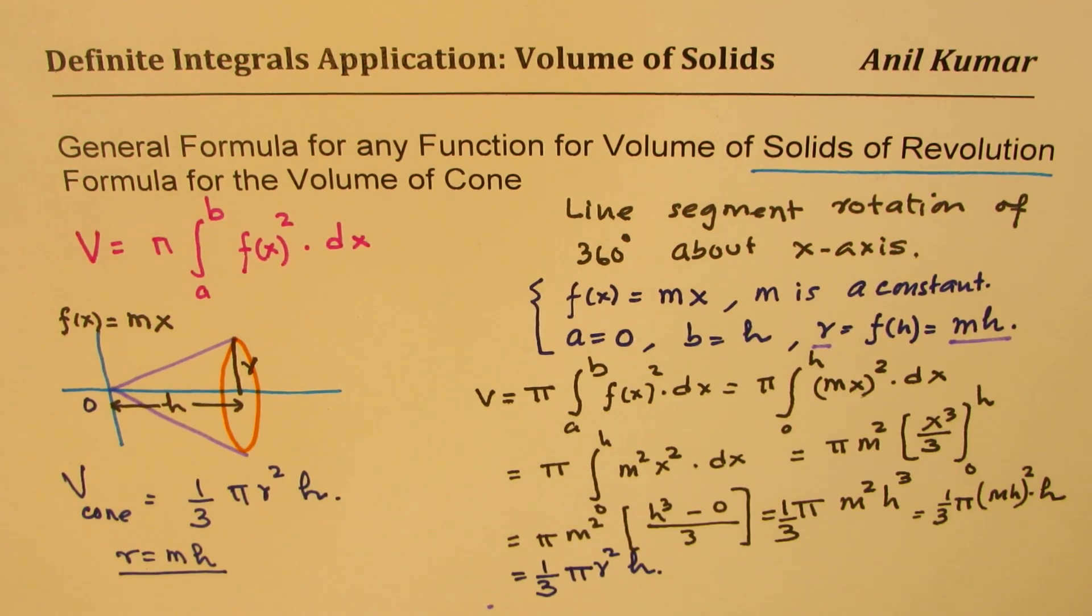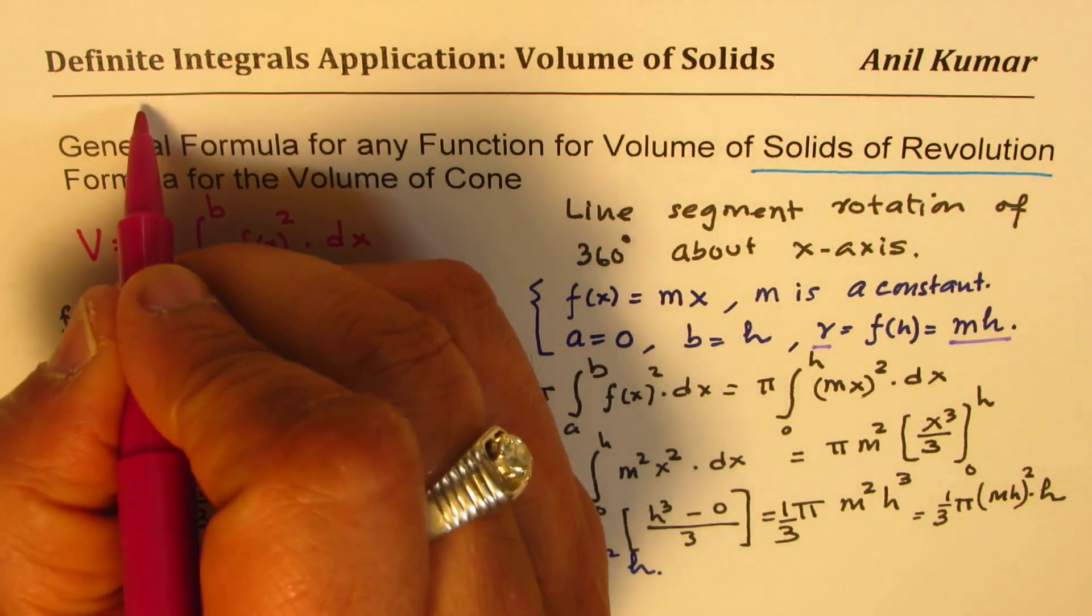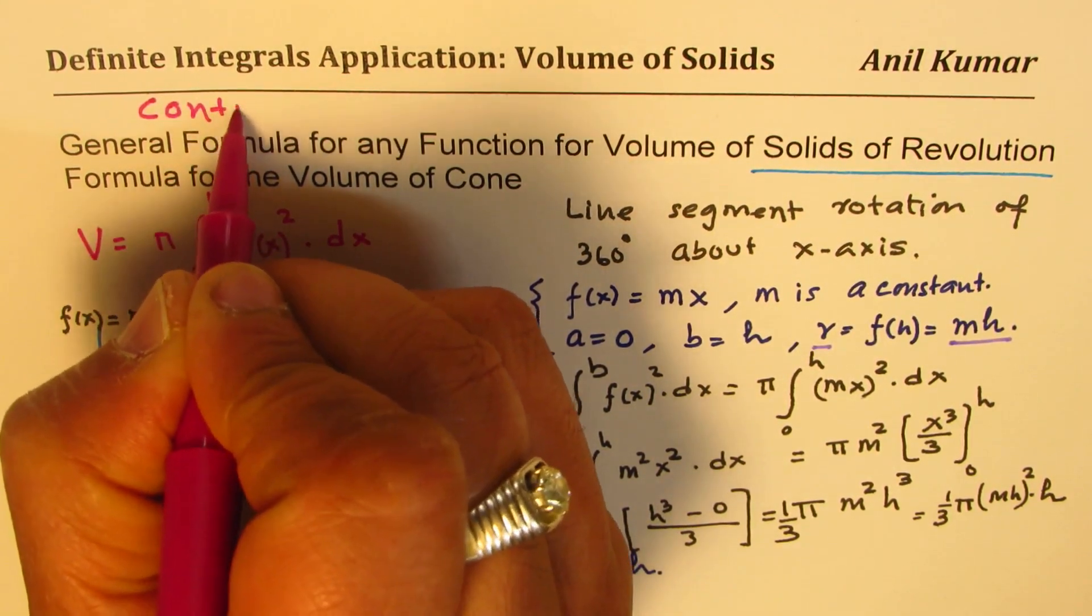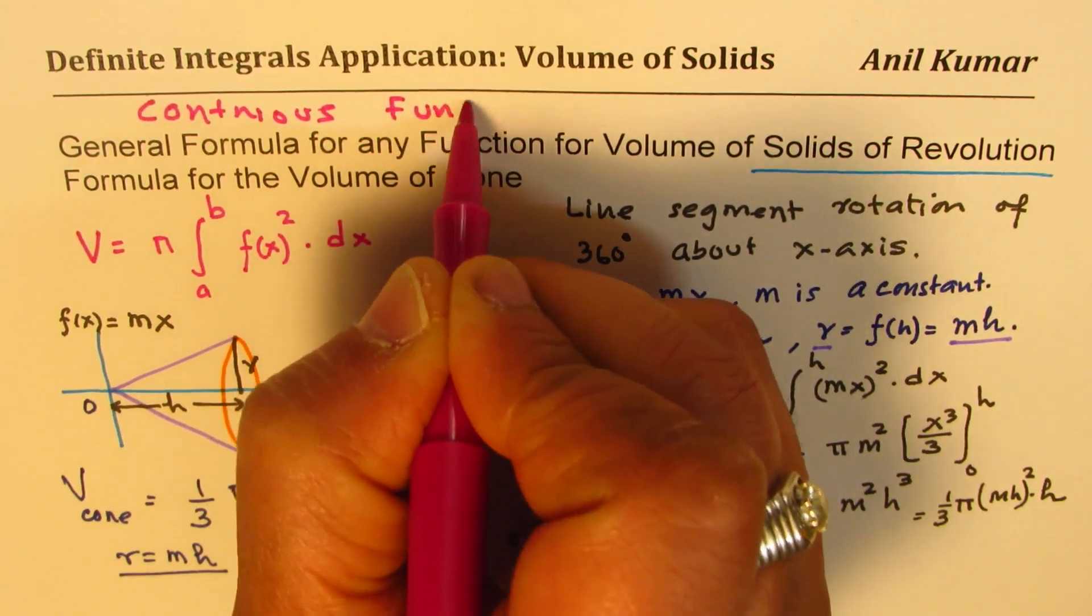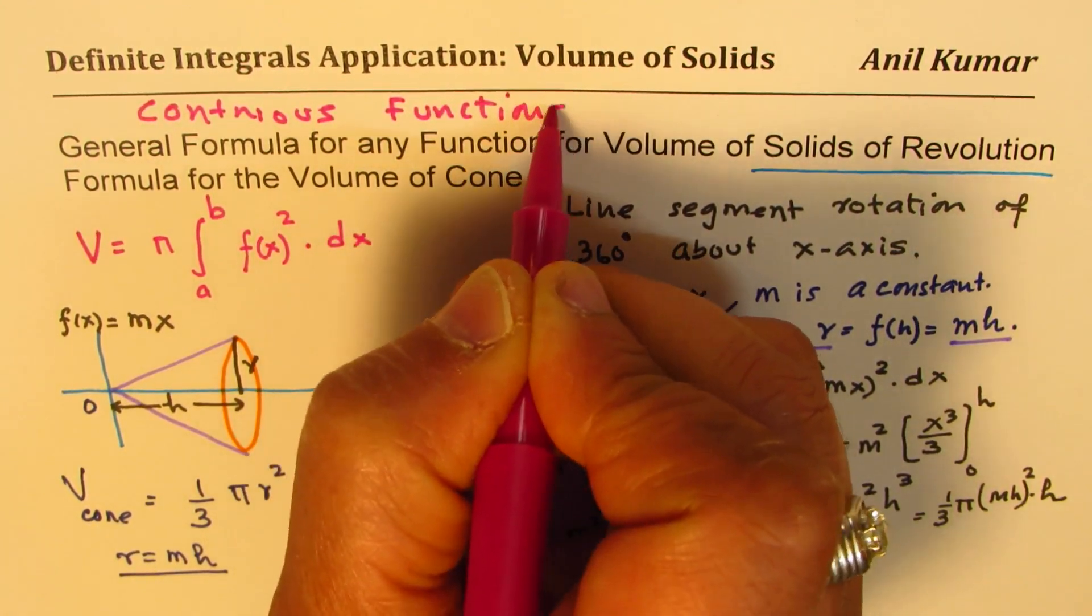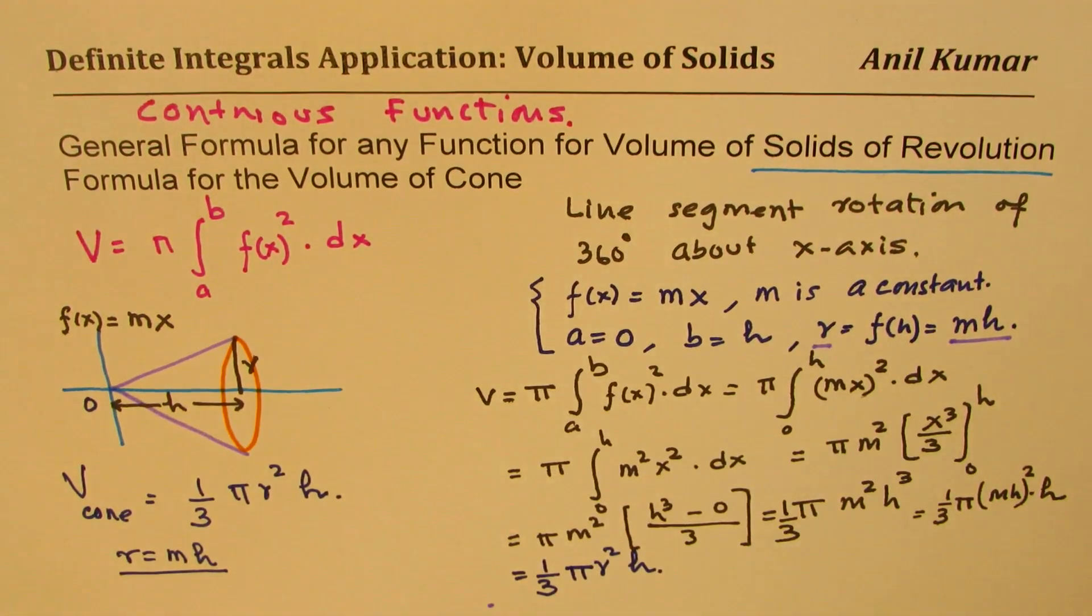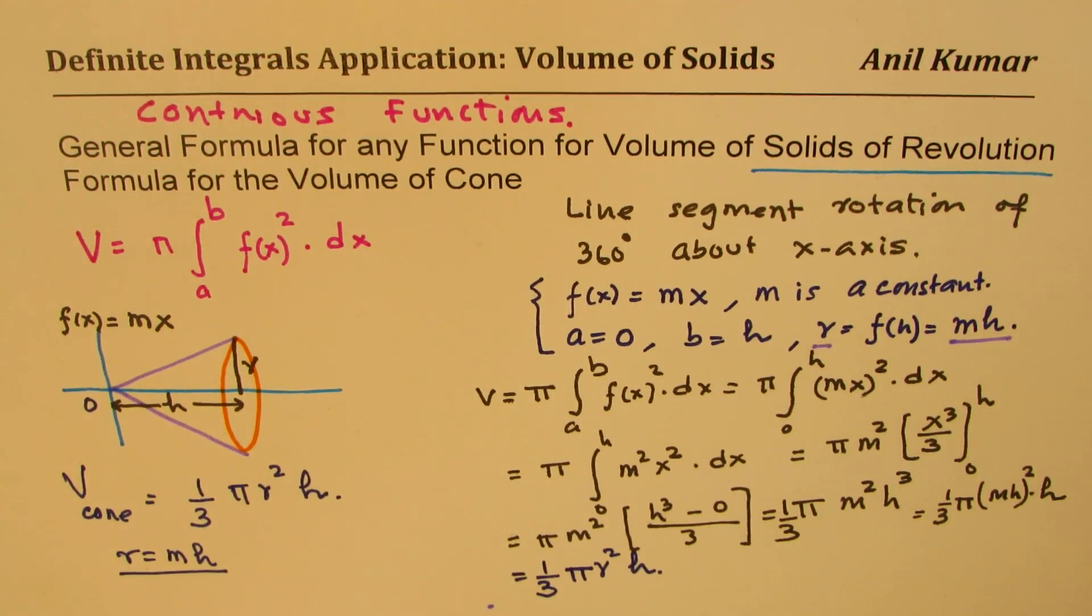That is how you can actually find the formula for your cone, and this method can be used to find volume of any solid formed by any given function. One condition to remember is we're talking about continuous functions within the given interval. I hope that helps. We'll take up more examples in this playlist. I'd like you to go through these examples and test questions to really get hold of this concept. Thanks for watching and all the best.